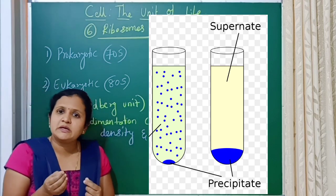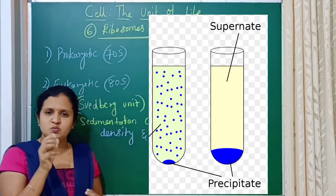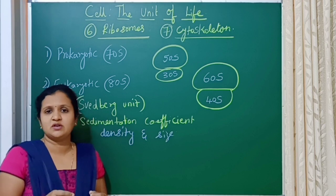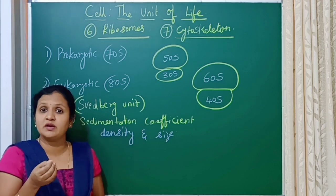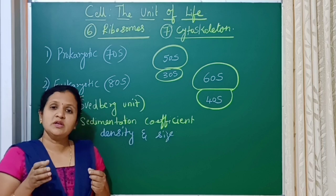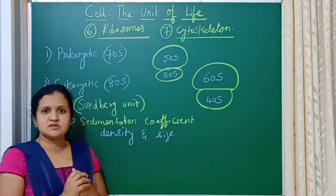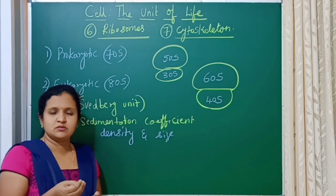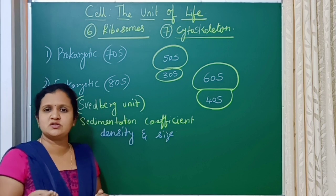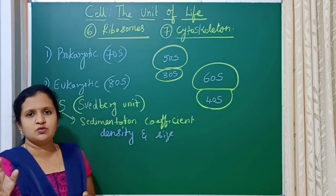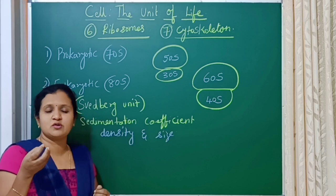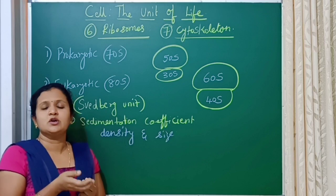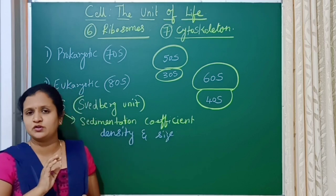But if the particle size is very small, even if you allow the suspension to stand, it is very difficult for them to settle. In the case of a cell suspension, components like ribosomes and endoplasmic reticulum are very small — measured in nanometers and angstrom units — and therefore those cellular components do not settle on their own.